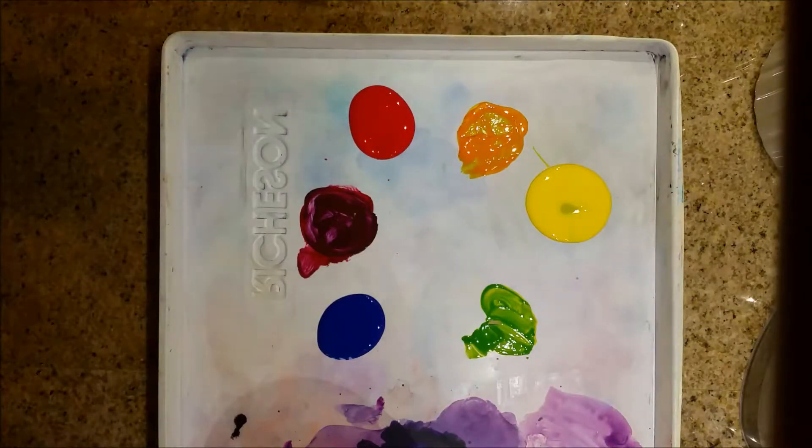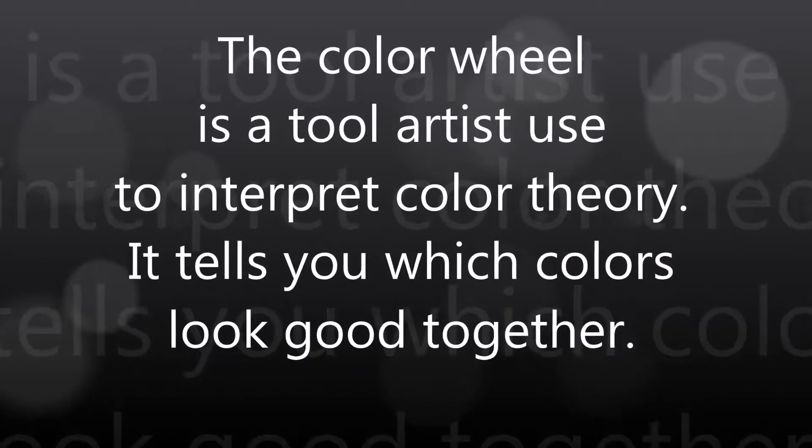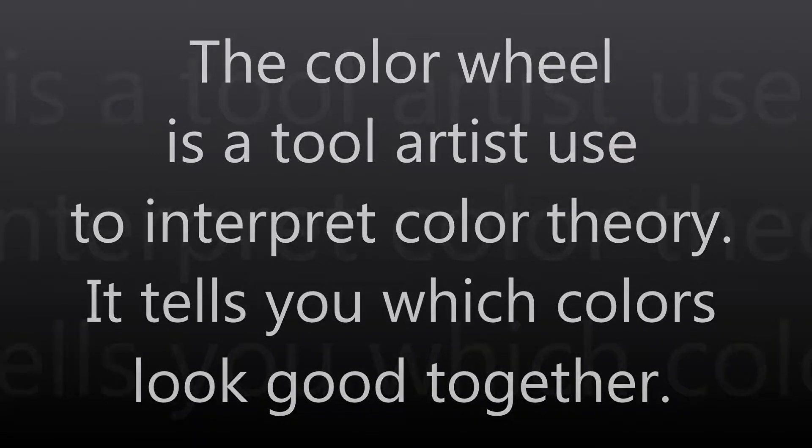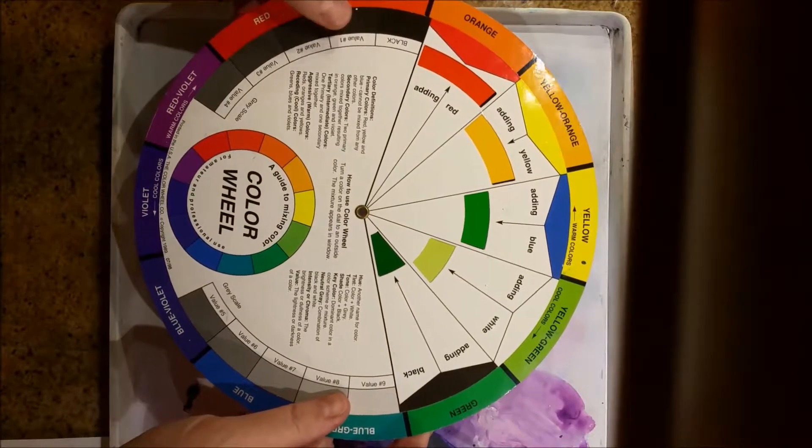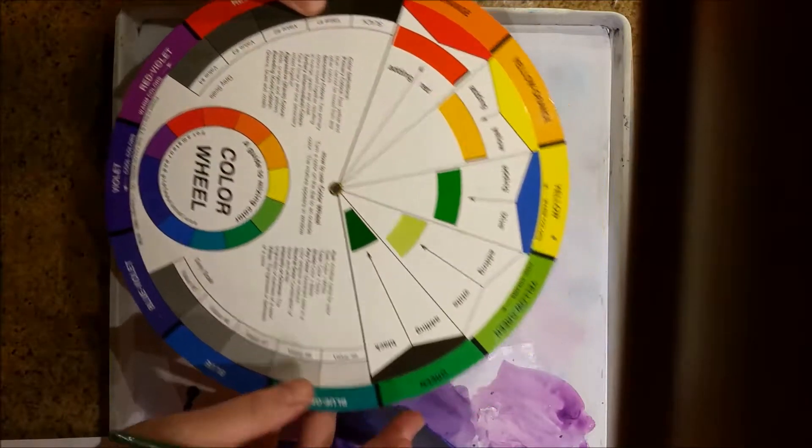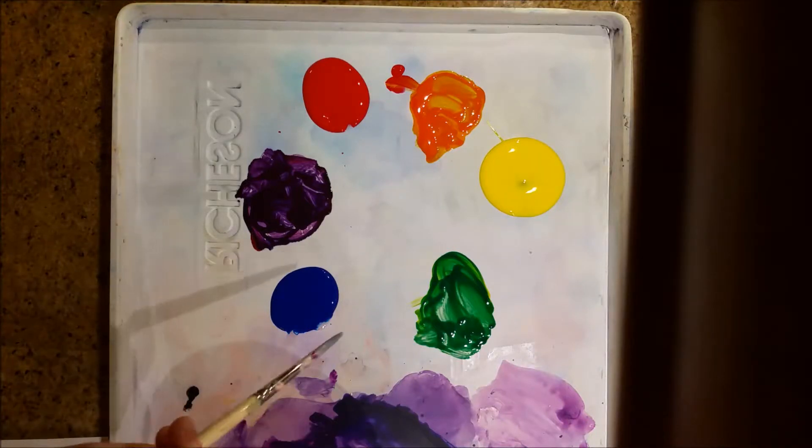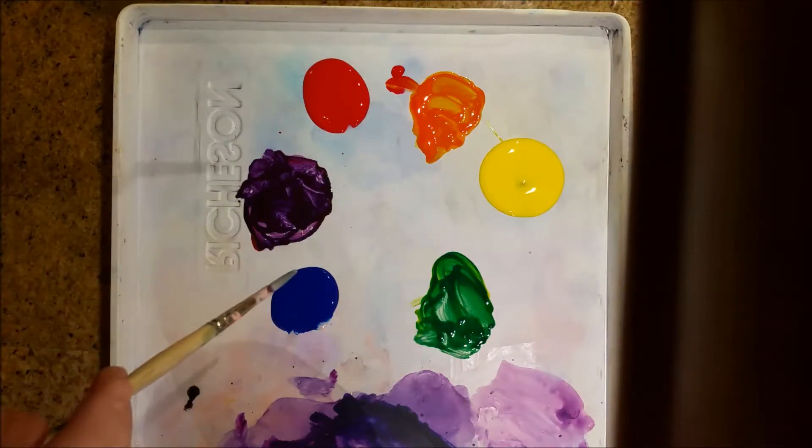So, those are our primary and secondary colors. I'm just double checking my colors now that I have mixed. As you can see, I have red, blue, and yellow, the three primary. I have orange, green, and violet, which are the secondary.